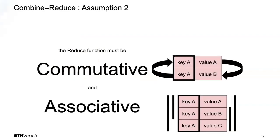The combine optimization is really magical — it massively reduces the amount of data that gets shuffled around. It's super useful as soon as you aggregate things.